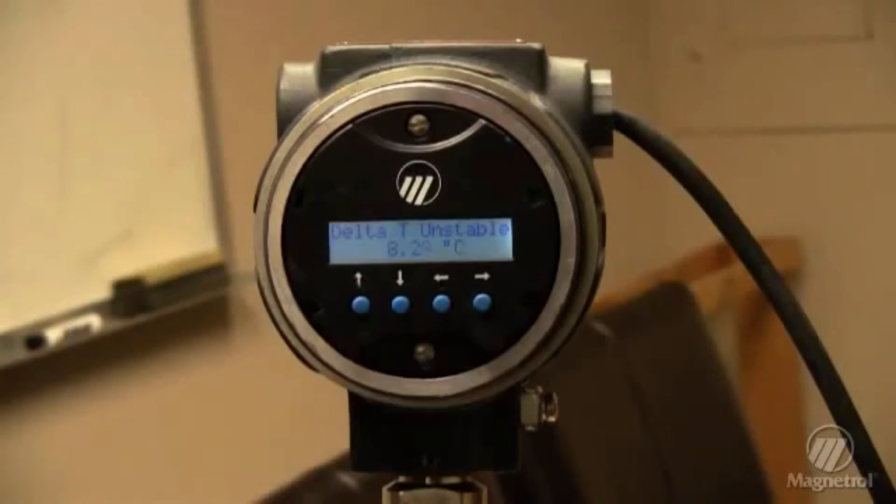Optionally, if your TA2 has HART, you can use a HART handheld or PACTware to complete these steps. In a short time, the temperature difference will stabilize and the two temperatures will show on the display.